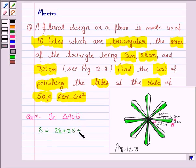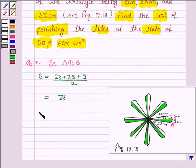S is equal to 28 plus 35 plus 9 upon 2. Since we are given 3 sides of a triangle, we will be using Heron's formula for which we need to find S which is given by A plus B plus C by 2.